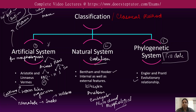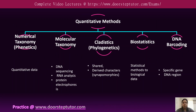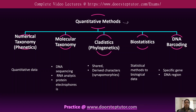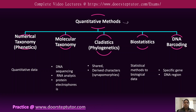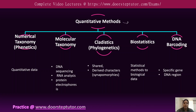That was the classical method which was used for the taxonomy of any organism. The classical method was used when we have the fossil record, like in the case of the Archaeopteryx, which is a connecting link between the reptiles and the birds. But if the fossil record is not present, there are a number of branches of taxonomy available.